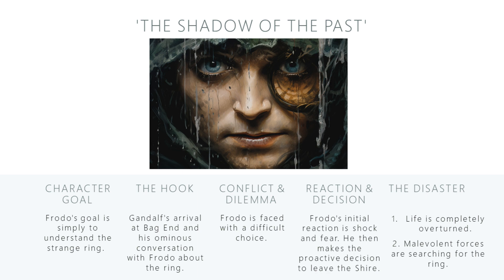When it comes to the conflict and dilemma, as Gandalf reveals the true nature of the ring and the danger it poses, we are introduced to the central conflict of the chapter. Frodo is faced with a difficult choice: continue his peaceful life in ignorance or accept the dangerous journey that lies ahead. Reaction and decision: Frodo's initial reaction is shock and fear — he wishes the ring had never come to him. But after some contemplation, he makes the proactive decision to leave the Shire, realizing that is the only way to keep his home safe. The disaster comes in two parts: Frodo's peaceful life is completely overturned, and Gandalf reveals that the malevolent forces searching for the ring are now likely aware of its location, ramping up the tension and urgency.